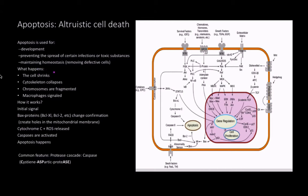So what exactly happens? Well, in the process of apoptosis, the cell is going to shrink up, the cytoskeleton is going to collapse, the chromosomes are going to be fragmented, and macrophages are going to be signaled. So we're going to kill ourselves, we're going to make sure that we don't infect anyone else, and we're going to signal the cleanup crew to come in and take care of the problem.